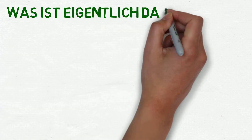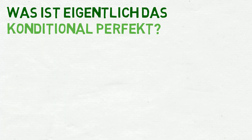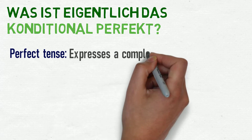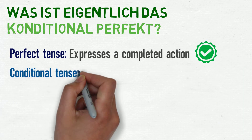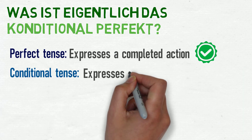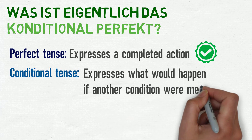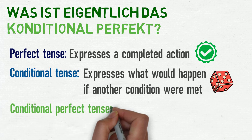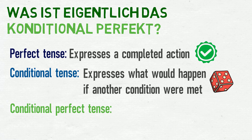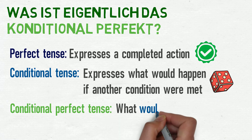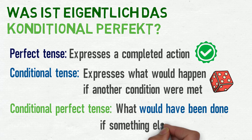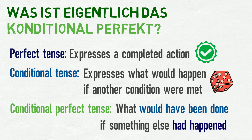In this lesson, we'll be looking at how to form what is called the conditional perfect tense. The perfect tense is normally used to express a completed action, and the conditional tense is used to say what would happen if another condition were met. The conditional perfect tense, therefore, can be used to give excuses, as it tells us what would have been done at a certain point in the past if something else had happened.